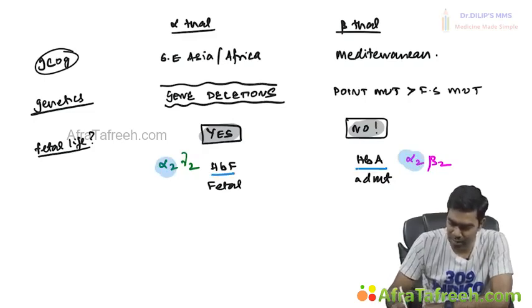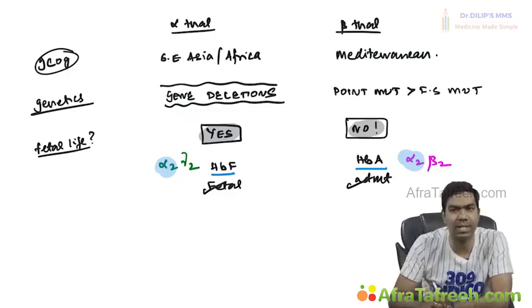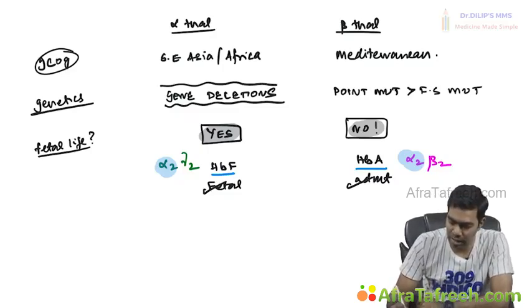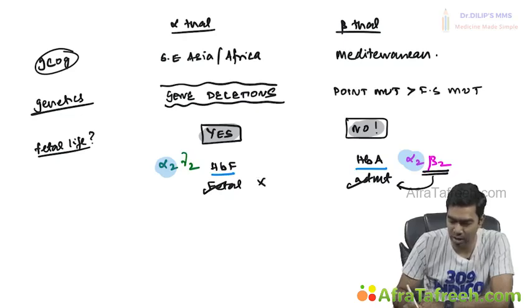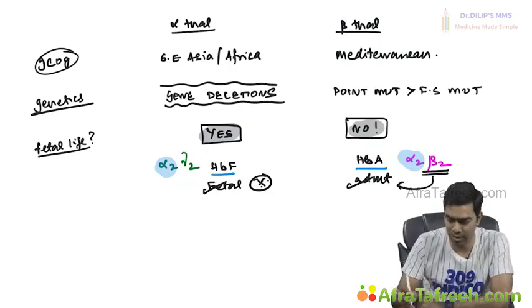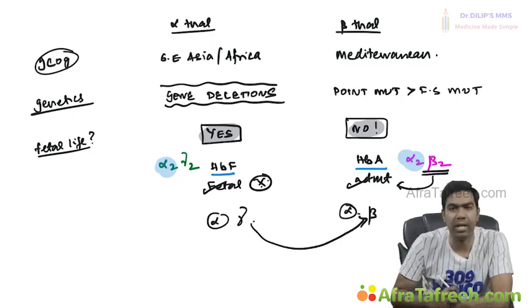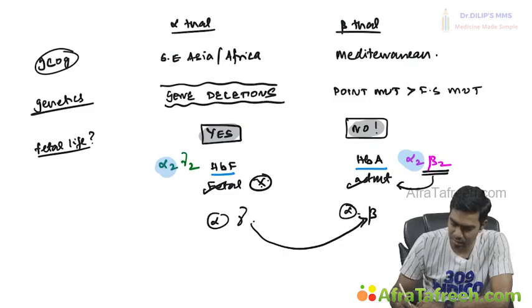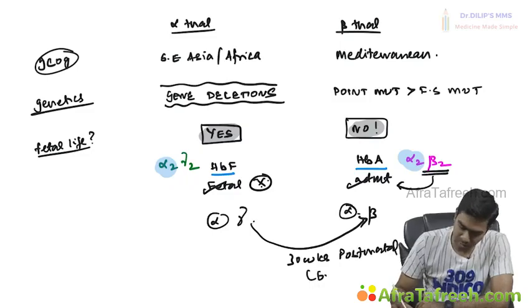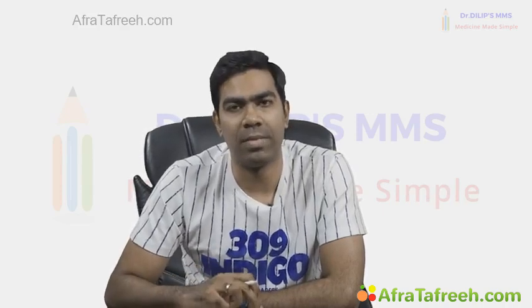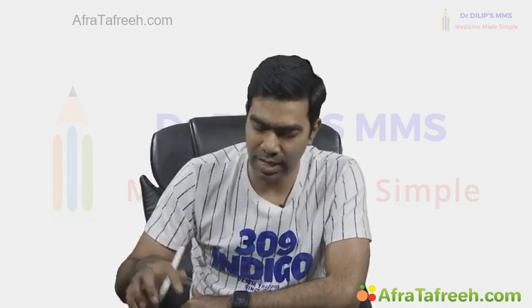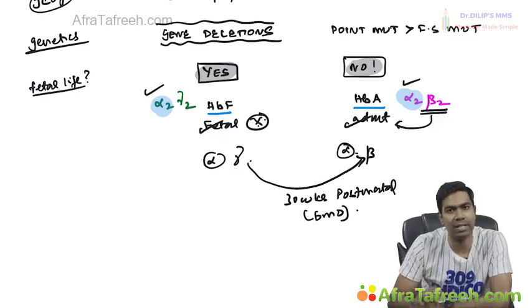Since both HbF and HbA need alpha chains, alpha thalassemia if sufficiently severe can cause problems in both the fetus and adult. Beta chains are only formed in adult life and are not important in fetal life. The gamma-to-beta chain shift is complete by around 30 weeks postnatal life, approximately six months after birth. That is when HbF is completely replaced by HbA.